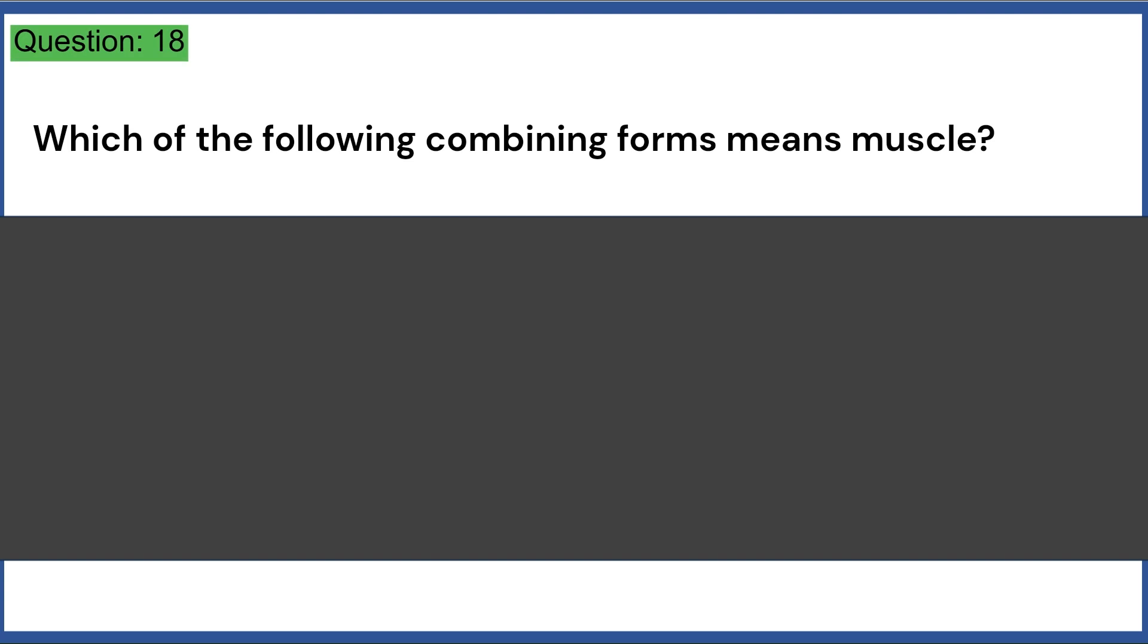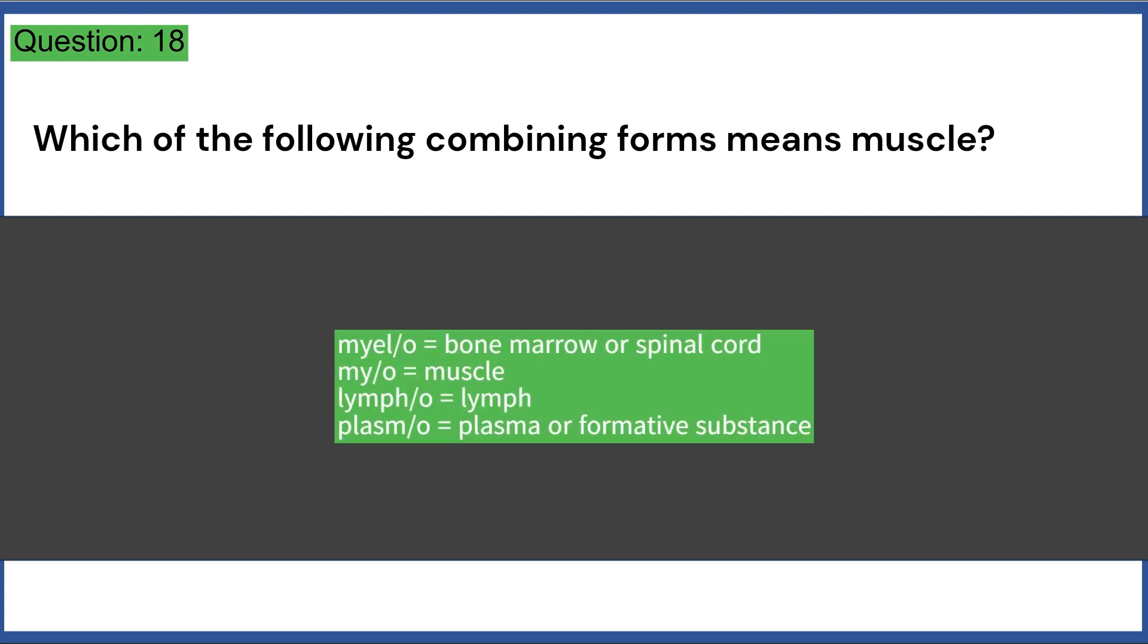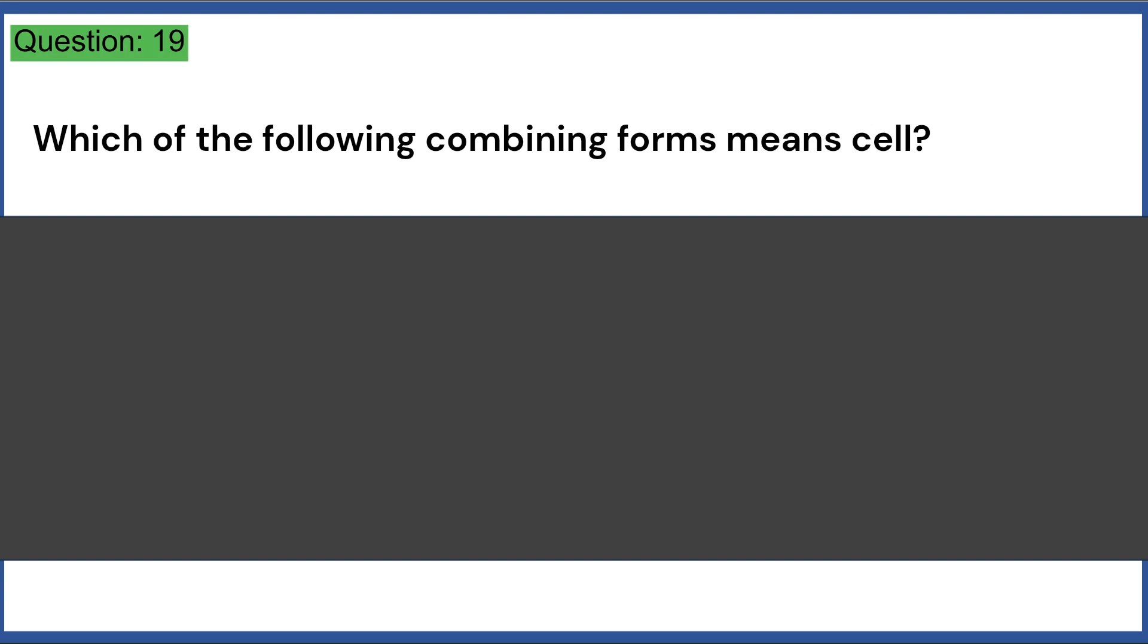Which of the following combining forms means muscle? a. Milo b. Myo c. Lympho d. Plasmo e. Baso. Answer, B Myo.